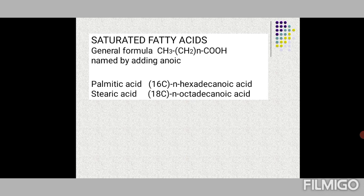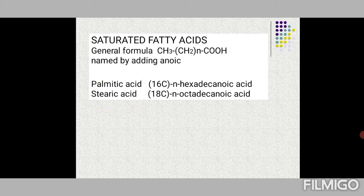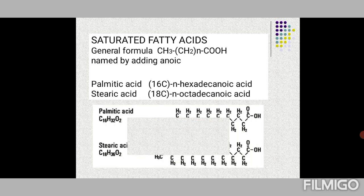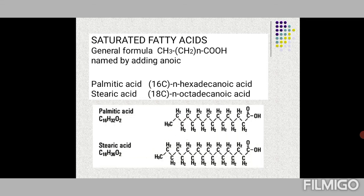Saturated fatty acids follow the general formula CH3-(CH2)n-COOH. Key examples are palmitic acid (16 carbons, hexadecanoic acid) and stearic acid (18 carbons, octadecanoic acid). When drawing stearic acid: CH3 at one end, COOH at the other, with CH2 repeated 14 times in between to give 18 carbons total.